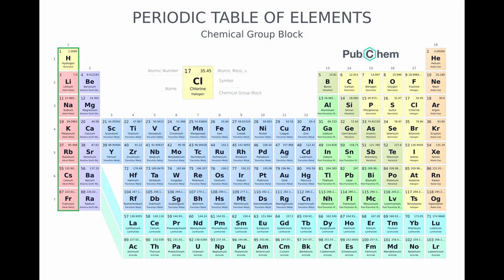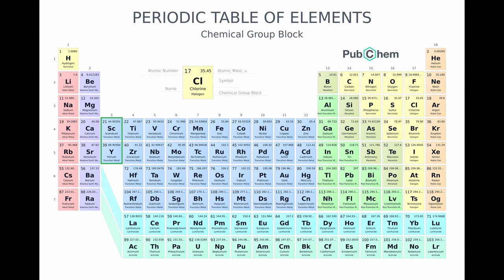All right, let's look at the periodic table here. See this first column, also known as a family — all of those atoms tend to take on a positive one charge as an ion. And here, all of these guys tend to take on a positive three charge.